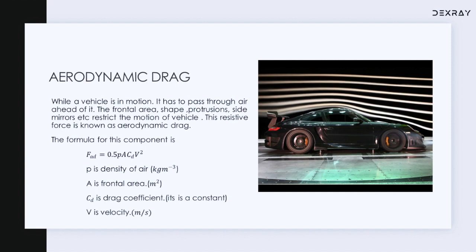Now let's look at the formula. The aerodynamic drag formula — FAD — has a linear relationship with the density of the air and the frontal area, and there is also a coefficient of drag. Looking at the velocity term, aerodynamic drag is proportional to the square of the velocity. So at higher speeds, aerodynamic drag will be very high. Vehicles traveling at high speeds, like sports cars and sports bikes, must have designs optimized to minimize aerodynamic drag at higher speeds.